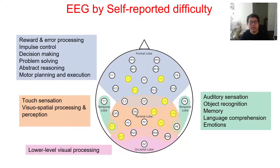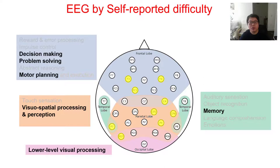Different brain areas have different functionalities. Here we present information we collected from the literature. We can see these regions are associated with functions like decision making, problem solving, motor planning, visual spatial processing and perception, lower level visual processing and memory. These functions are required for completing our tasks.